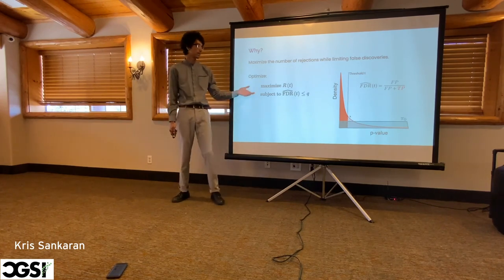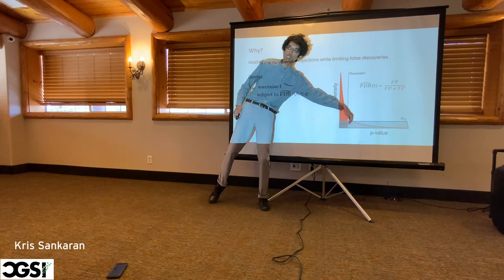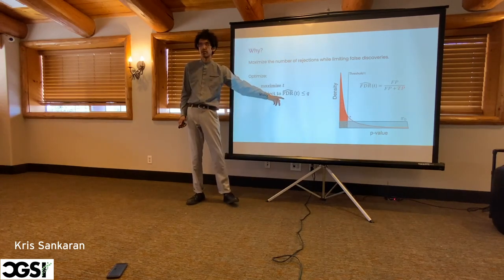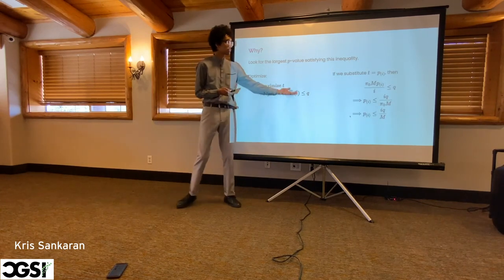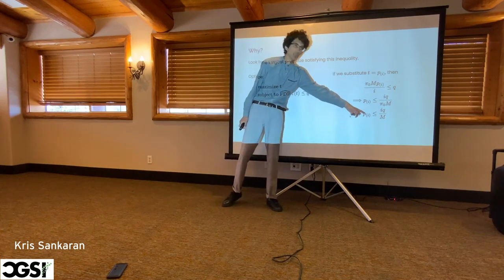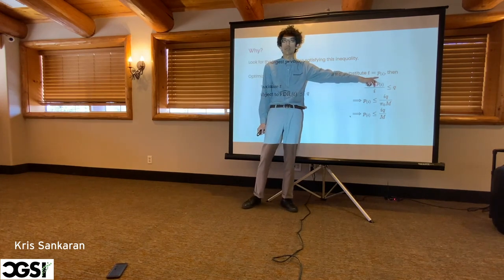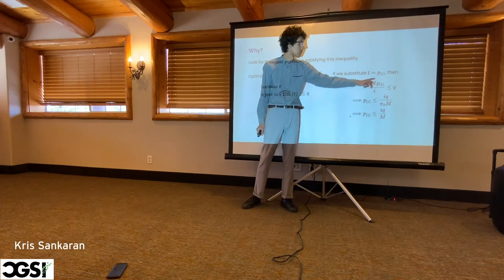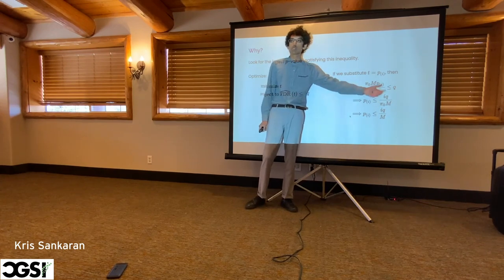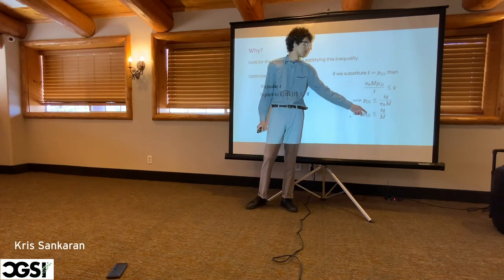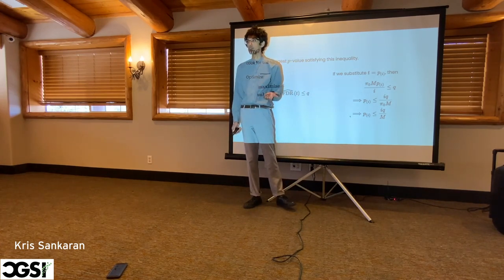The Benjamini-Hochberg procedure is motivated by this kind of optimization — you want to maximize the number of rejections, or try to maximize the threshold as much as you can while controlling the false discovery rate. If you just use this picture and set the threshold equal to the i-th ordered p-value, substituting into the formula, the number of rejections is i, and using the fact that the proportion of nulls must be less than 1 gives you the BH thresholds. This is not exactly the proof, but it gives the key idea.